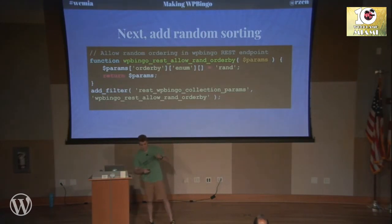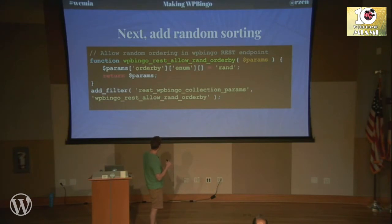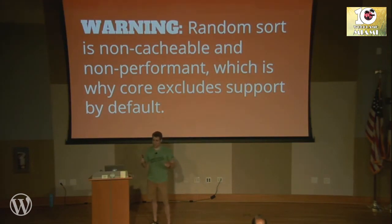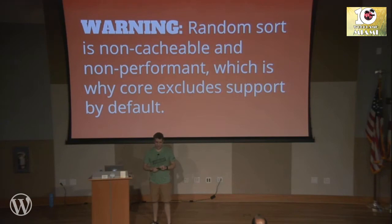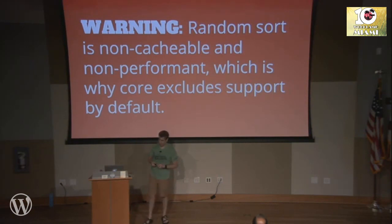I did have to make one modification to sort things randomly, because I want 24 random squares every time someone builds a bingo board. By default, random sort is disabled. So I filtered the REST wp-bingo collection params to say that when I specify orderby, I'm allowed to say it's random. Don't do this in production because it is very non-performant and non-cacheable — if someone found out about this and stuck a botnet at this web address, they would bring the server down with thousands of uncacheable requests. That's why it's turned off by default. You could add caching to it, or do it slightly differently to prevent bringing things down.